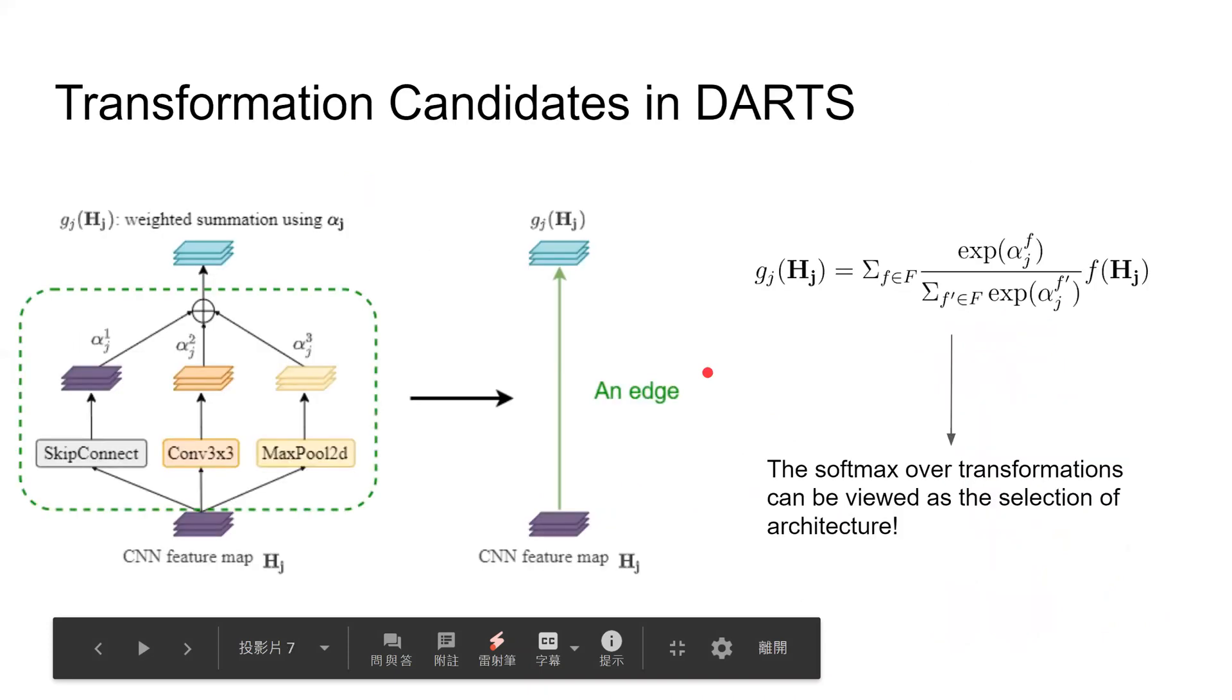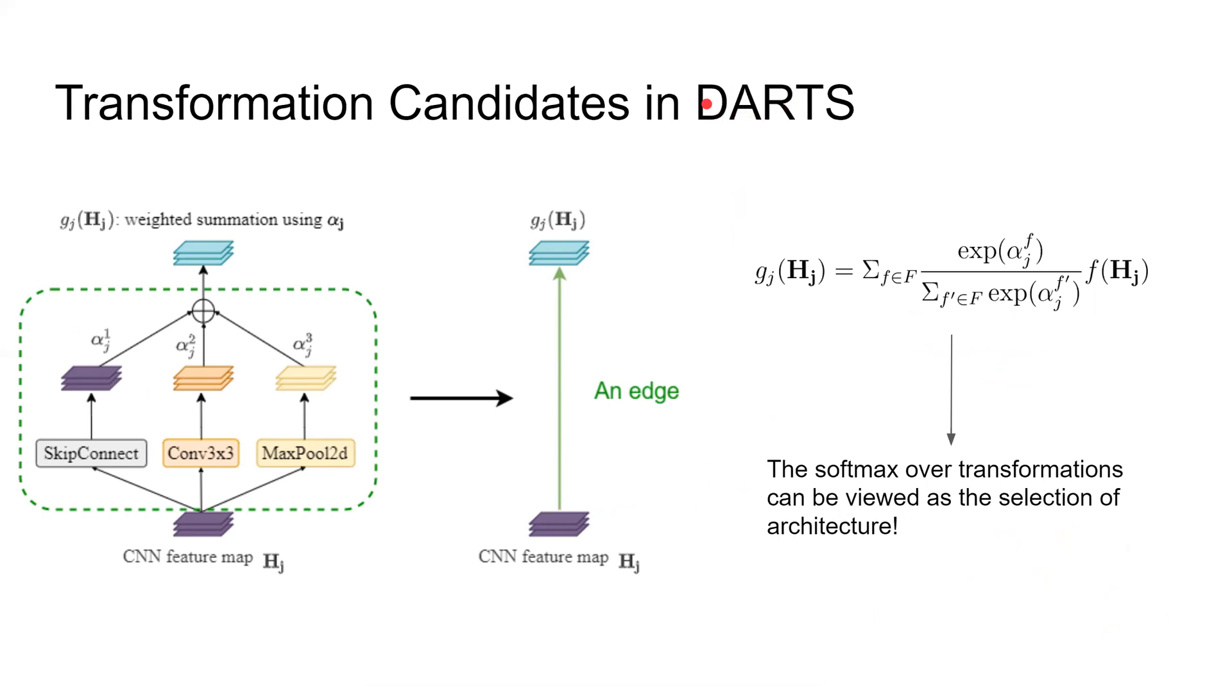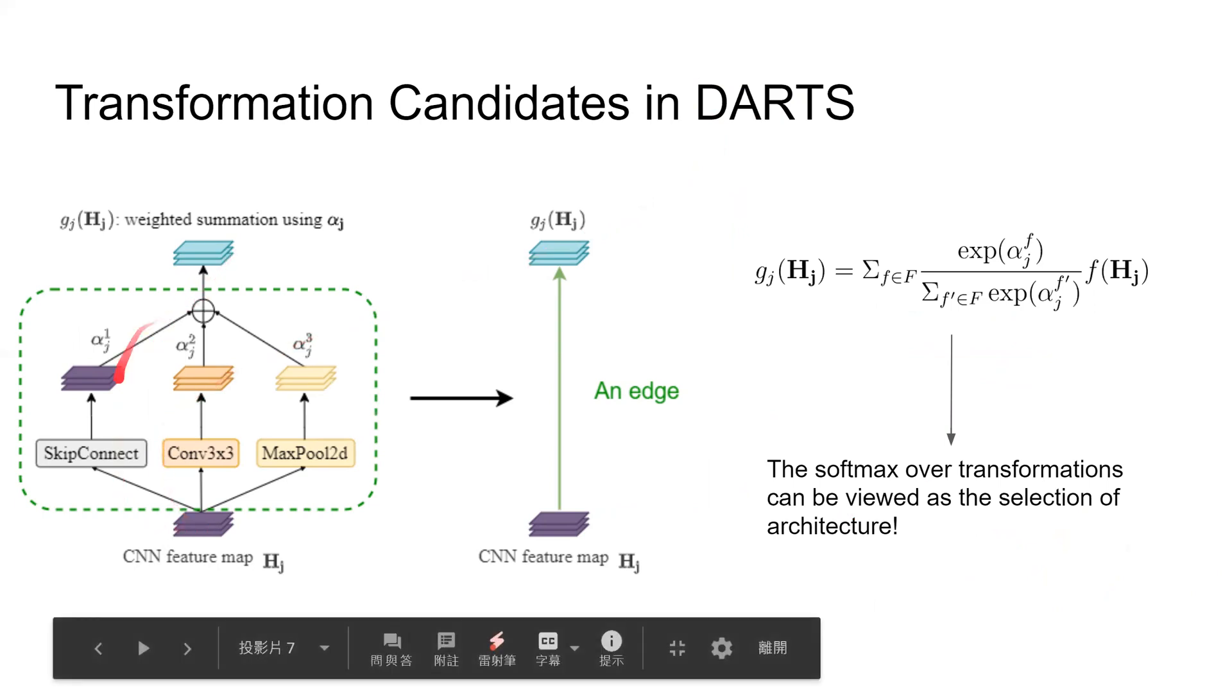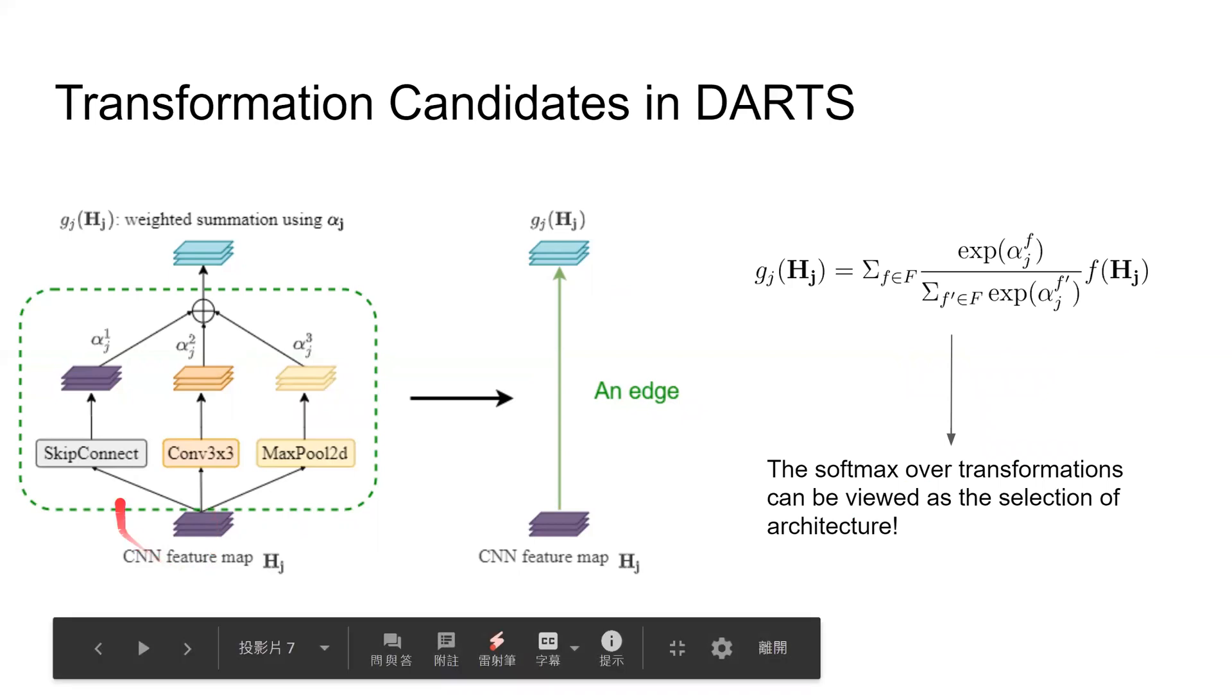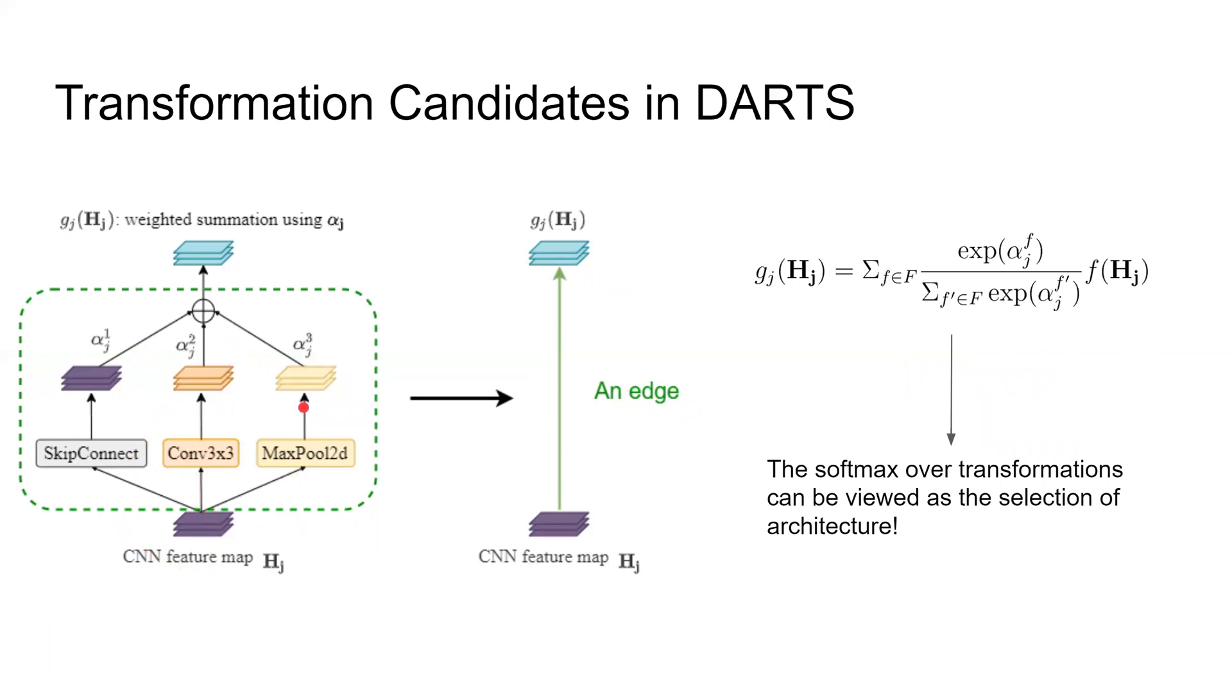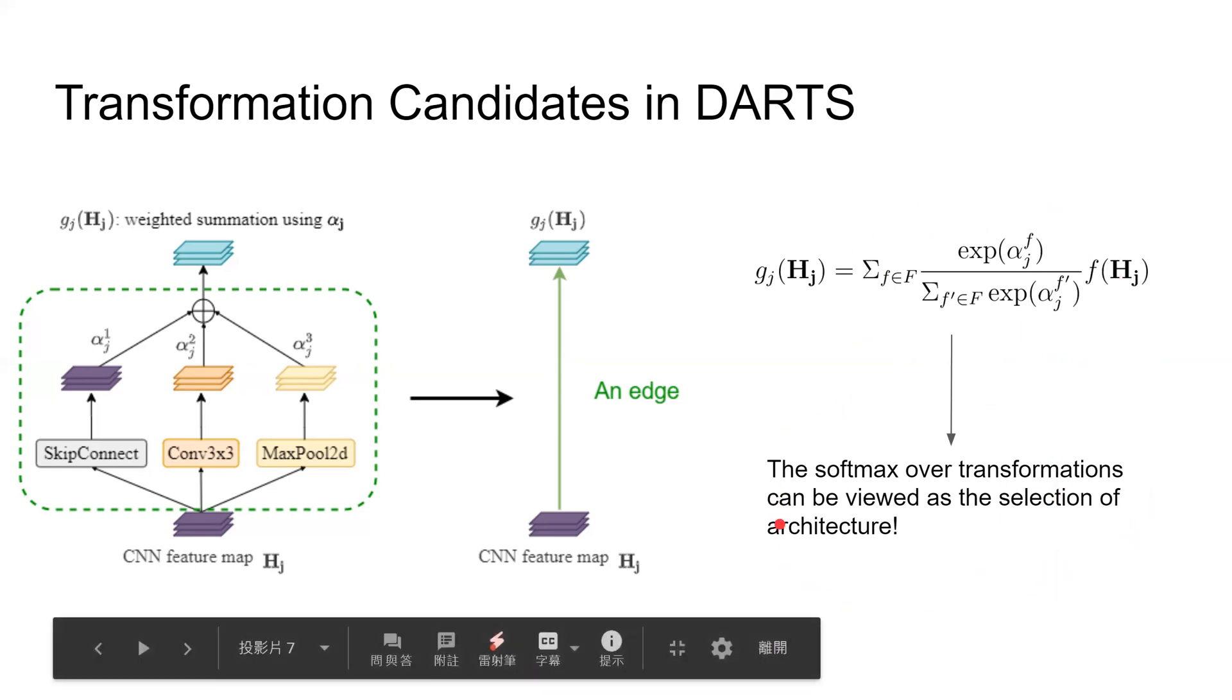Next, I'm going to describe Differentiable Architecture Search, or DARTS. If we want to transform a CNN feature map into another, we have many choices, such as convolutions, pooling, or skip connection. So the goal of DARTS is to select the suitable transformation for feature maps automatically. First of all, we have to define some transformation candidates. And each candidate can transform the input feature map into another. Then the weighted sum, G of H, of these transformed feature maps is computed with some continuous variables, alpha, and with this softmax equation. Here, the F represents a transformation candidate. And this softmax over transformations can be regarded as the selection of architecture. To be simpler, let's call the softmax weighted sum operation between the transformation feature map, G of H, and the original feature map, H and H.